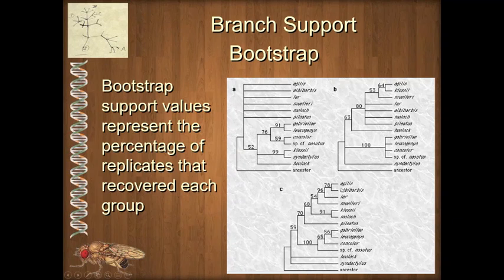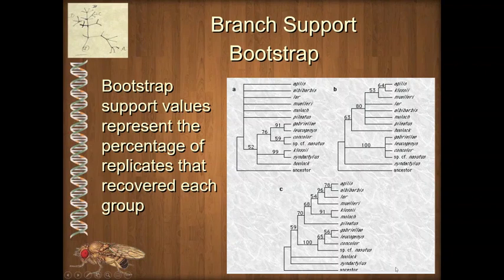Here's an example of bootstrap support values — the highest they can be is 100, meaning we found those species together in every single pseudo-replicate. If it's below 50, we collapse it down and make a polytomy. So 52 is very weakly supported, 91 and 99 are really well supported. We have different levels of confidence for different branches. When you see numbers above nodes, most commonly these are going to be bootstrap support values, somewhere between 50 and 100.